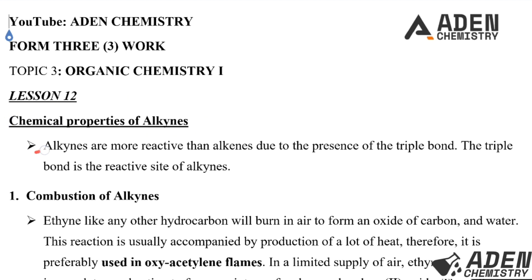Alkynes are more reactive than alkenes due to the presence of the triple bond. Remember alkenes have a double bond, but alkynes have a triple bond, so alkynes are more reactive than alkenes. The triple bond is the reactive site for alkynes.